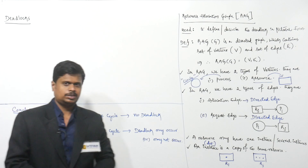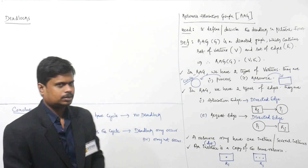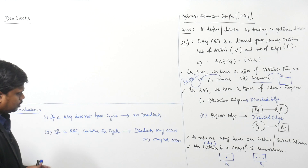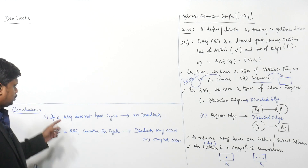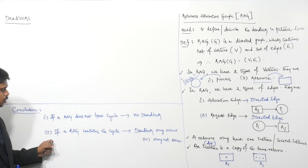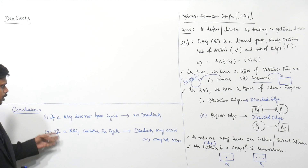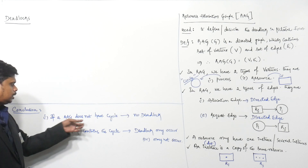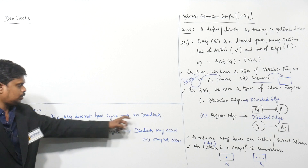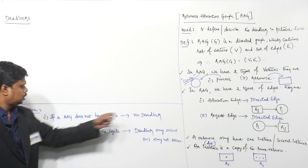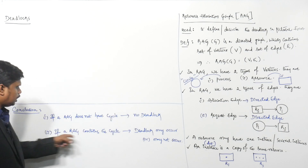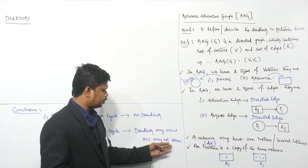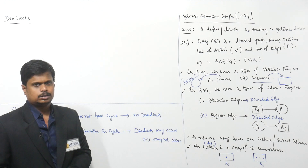In continuation with the previous session, before starting the current session, we have seen the conclusion points. What is the conclusion point? Conclusion point 1: if the RAG does not have a cycle, then we can say there is no deadlock. If the RAG contains a cycle, then deadlock may or may not occur.